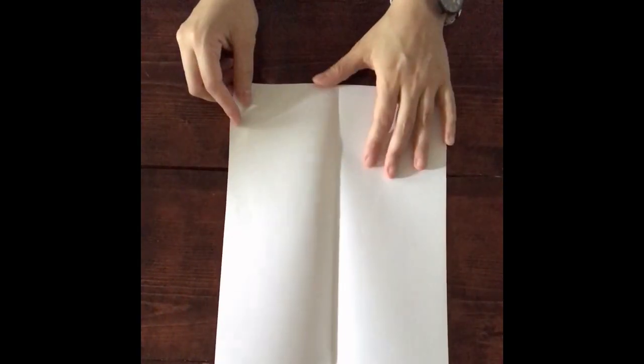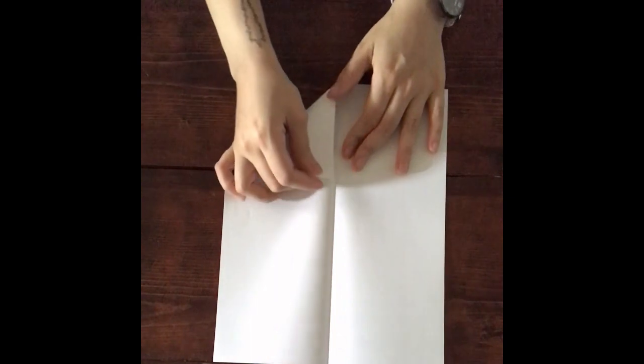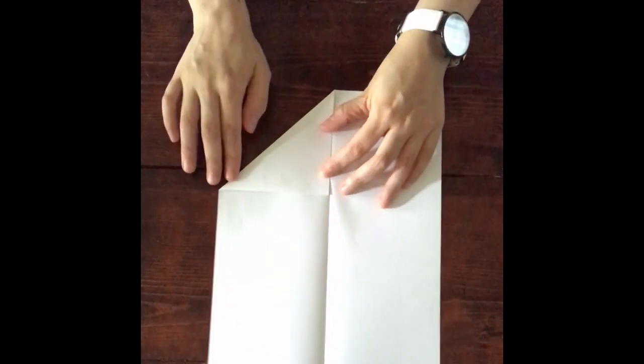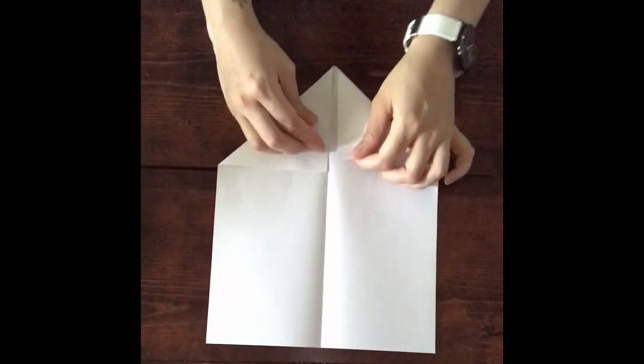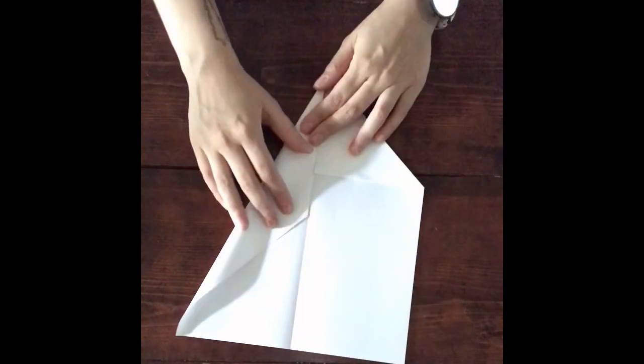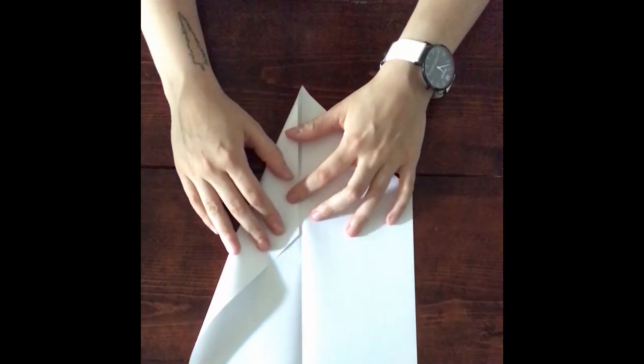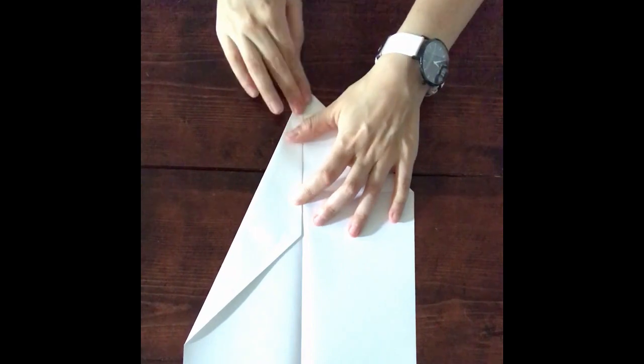You will then fold the top corners down to the middle of the plane. Make sure your folds are accurate and tight. Adjust as needed. Next you will fold the angled edges down to the middle of the plane.